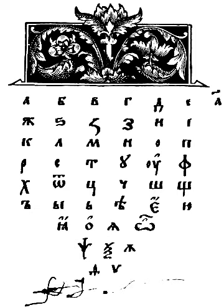The Cyrillic script is a writing system used for various alphabets across Eurasia, particularly in Eastern Europe, the Caucasus, Central Asia, and North Asia. It is based on the early Cyrillic alphabet developed during the 9th century AD at the pre-Slav literary school in the first Bulgarian Empire.